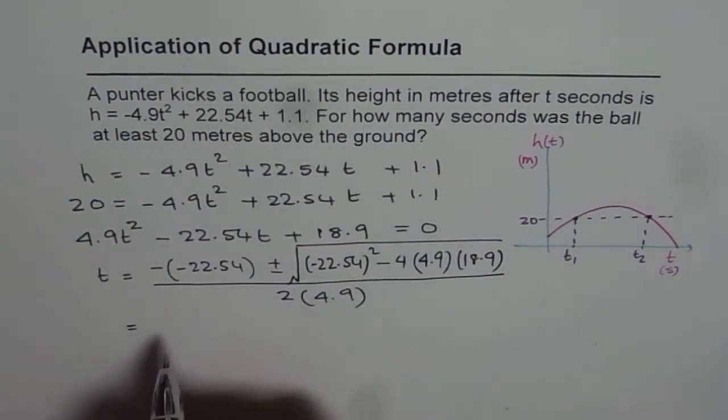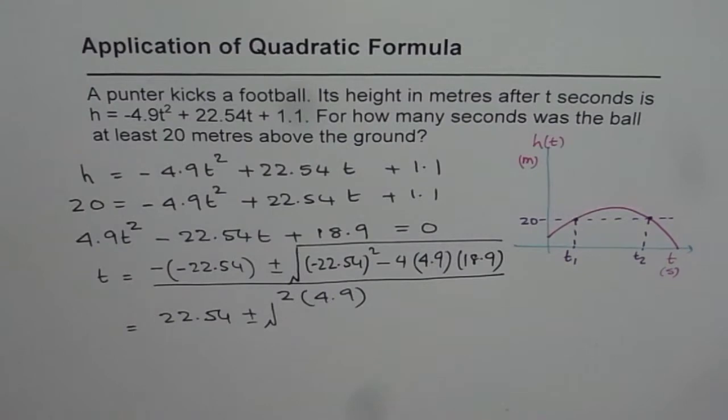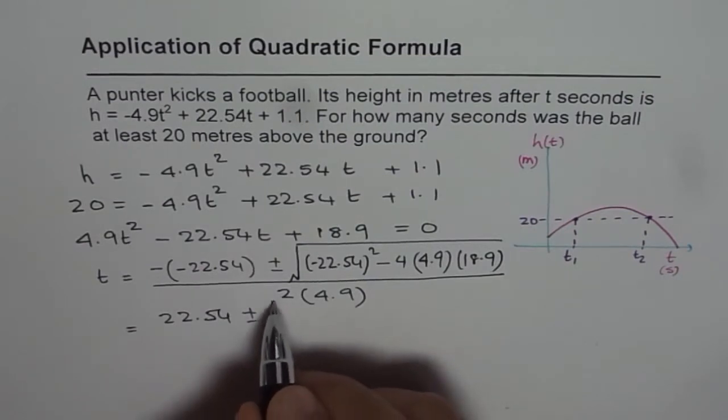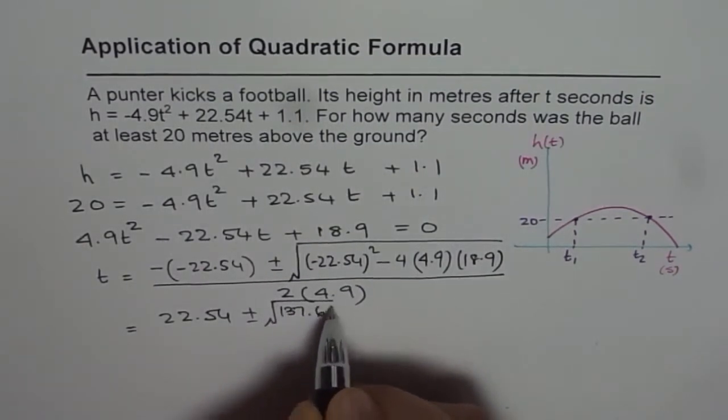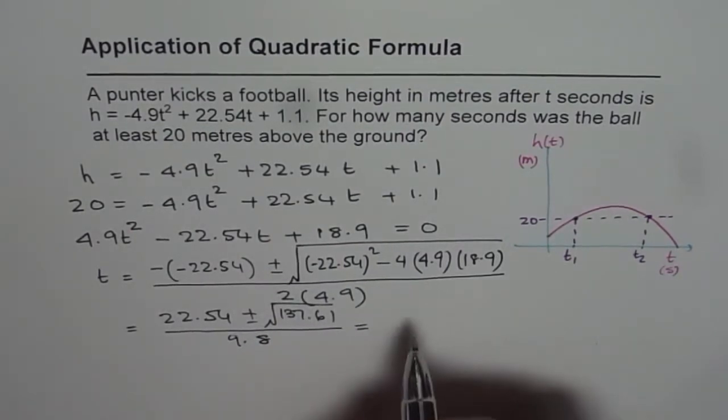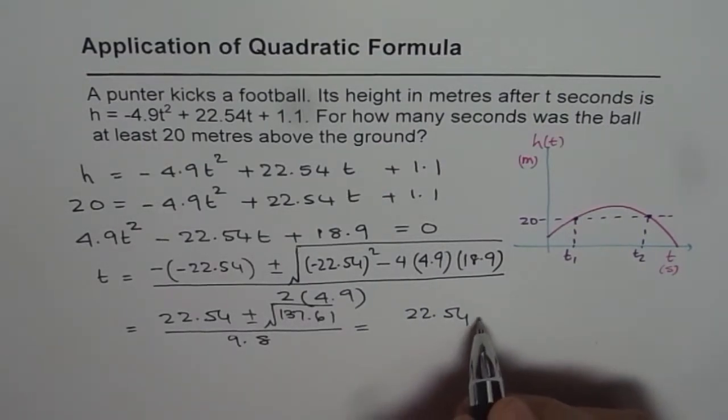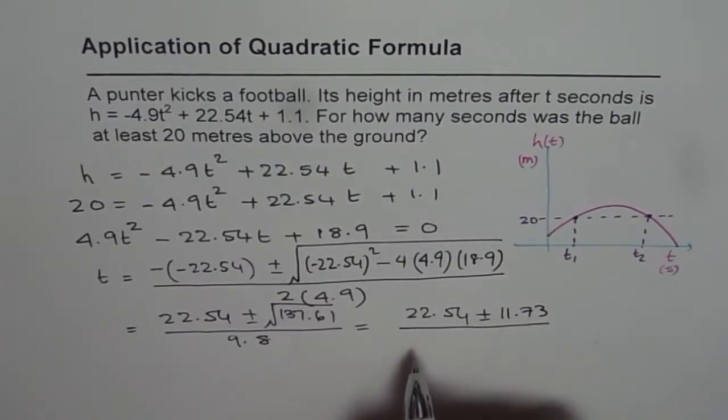Now you can use your calculator and find this answer. So which is basically 22.54 plus or minus square root of, let us calculate. So we get 22.54 squared minus 4 times 4.9 times 18.9 equals 137.61. So within the square root, we get 137.61 and the denominator is 2 times 4.9, so that is 9.8.